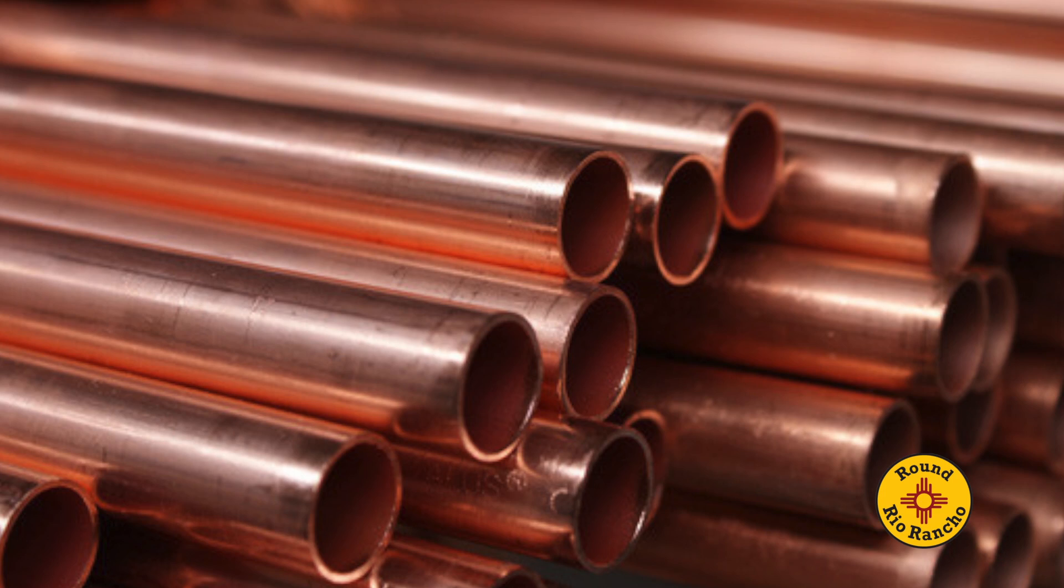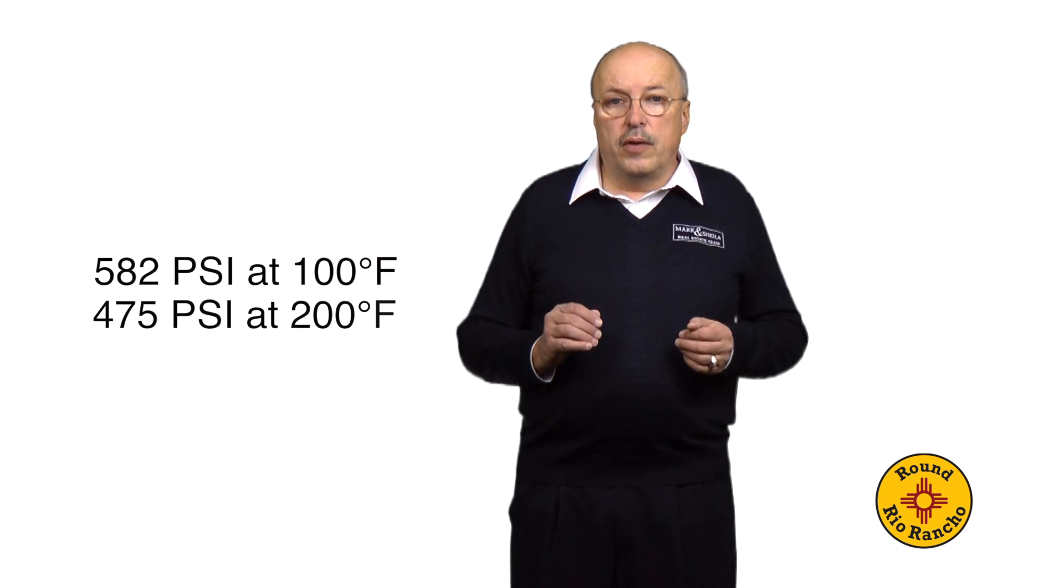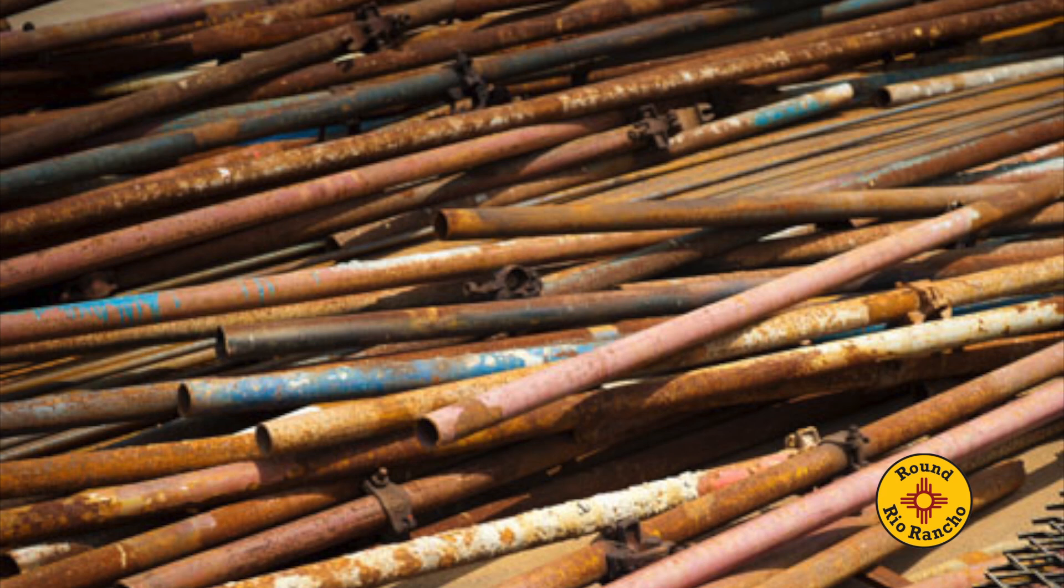The gold standard was and still is type L copper pipe. This is slightly thicker than type M and will probably last longer. The cost of copper has shot up in recent years and proper installation requires some skill and experience as joints need to be made using solder and a torch. It's pressure rated at 582 psi at 100 degrees Fahrenheit and 475 psi at 200 degrees. If the home is on a raised foundation and the plumbing is in a crawl space below, be sure to secure the access as thieves have been known to tear out copper plumbing for the scrap value if they can get to it. Copper pipe is very thermally conductive and is subject to damage from freezing.